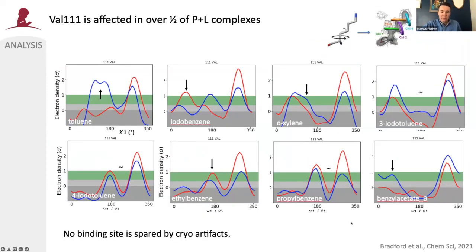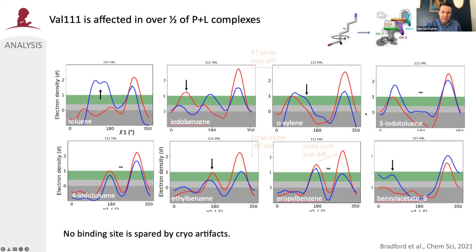Across the nine different pairs we collected, no binding site was actually spared from cryo artifacts — which is alarming for people who take these structures for ligand discovery. One thing to highlight is a residue that causes problems in computation due to high energy barriers preventing it from reorienting on simulation timescales for MD simulations: valine 1.11. That residue was affected in over half the protein-ligand complexes.